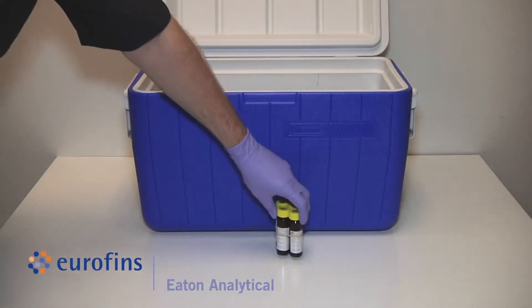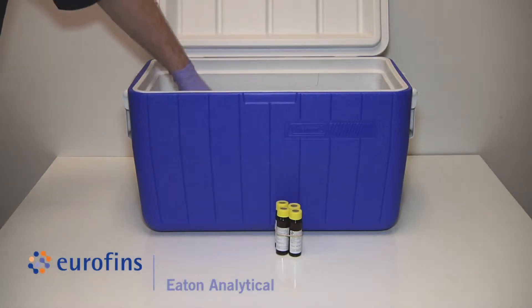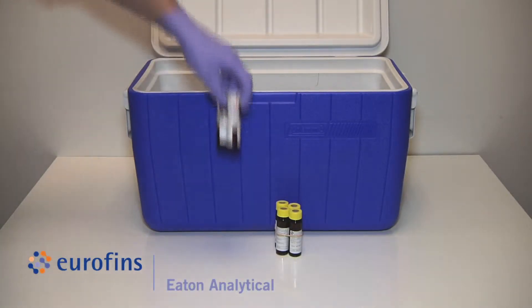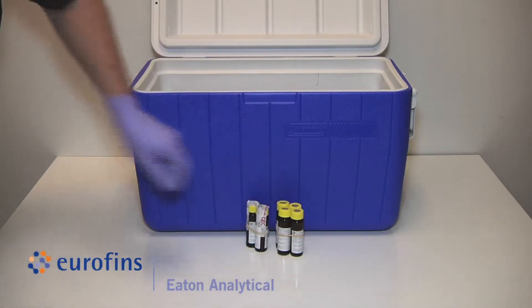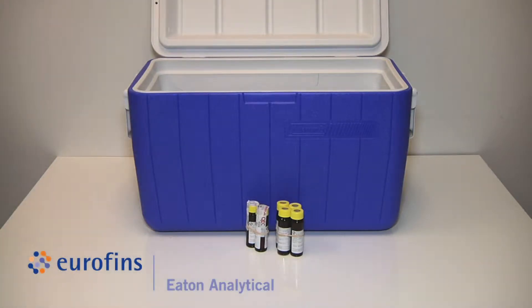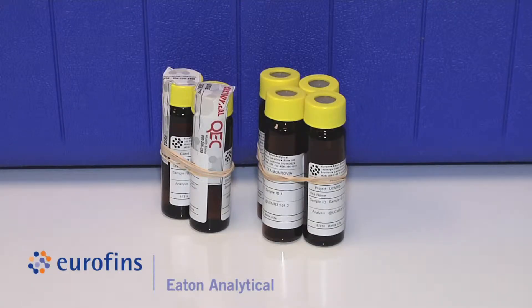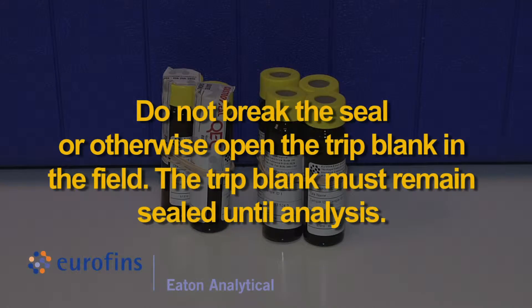Your 524.3 kit should include four empty sample vials with preservative and two sealed trip blanks referred to as field blanks in UCMR3. The 524.3 trip blank is sealed with custody tape.